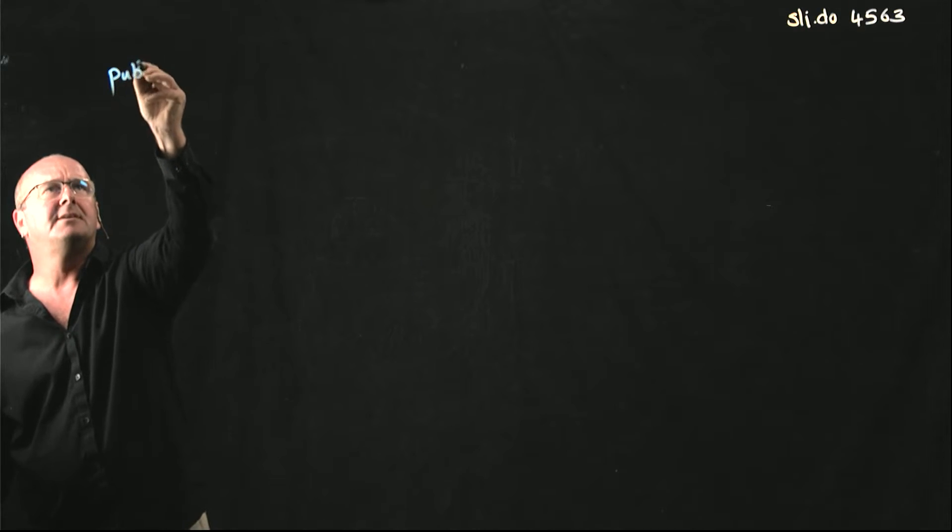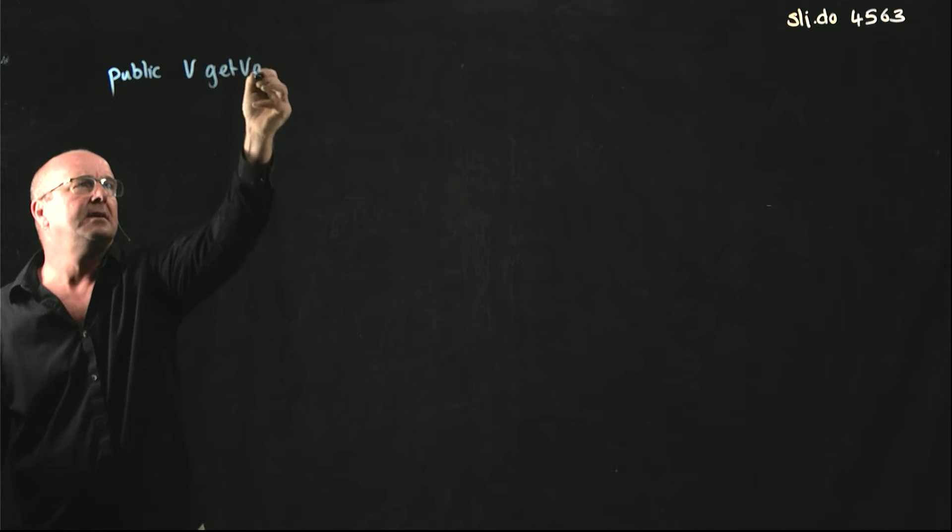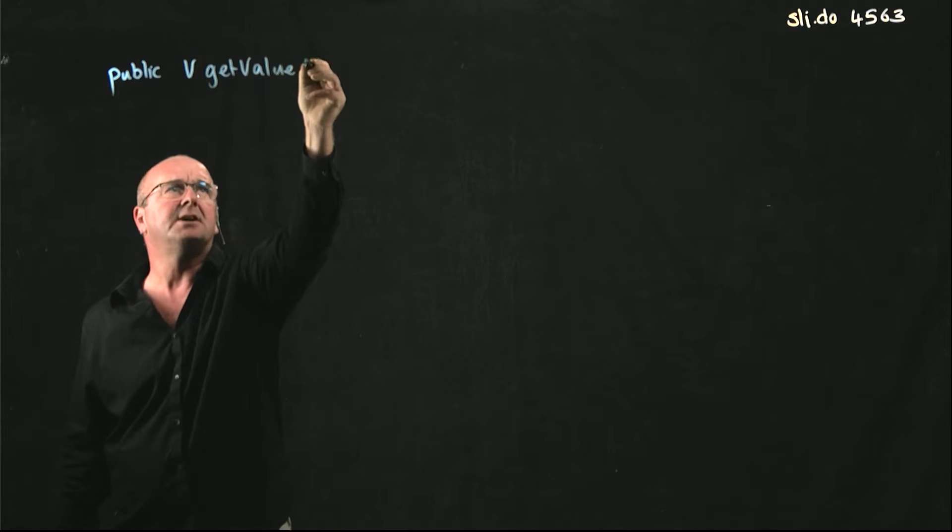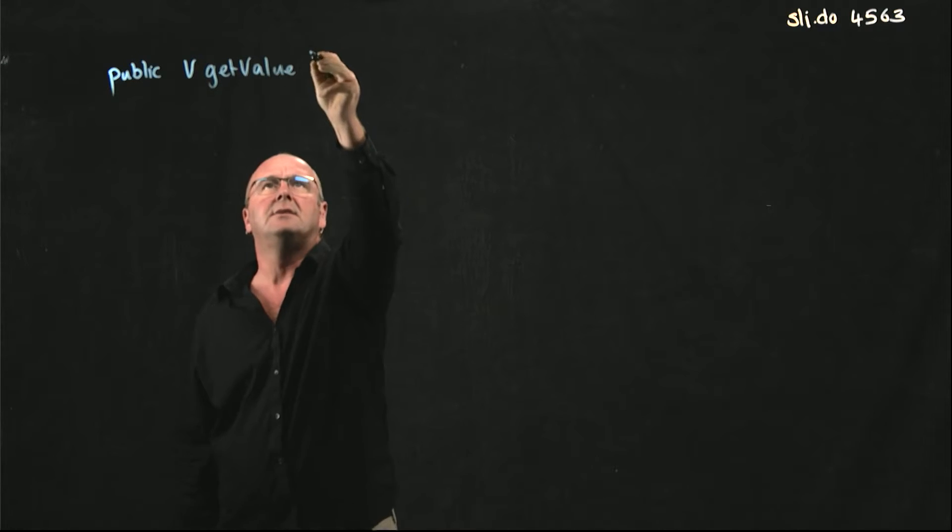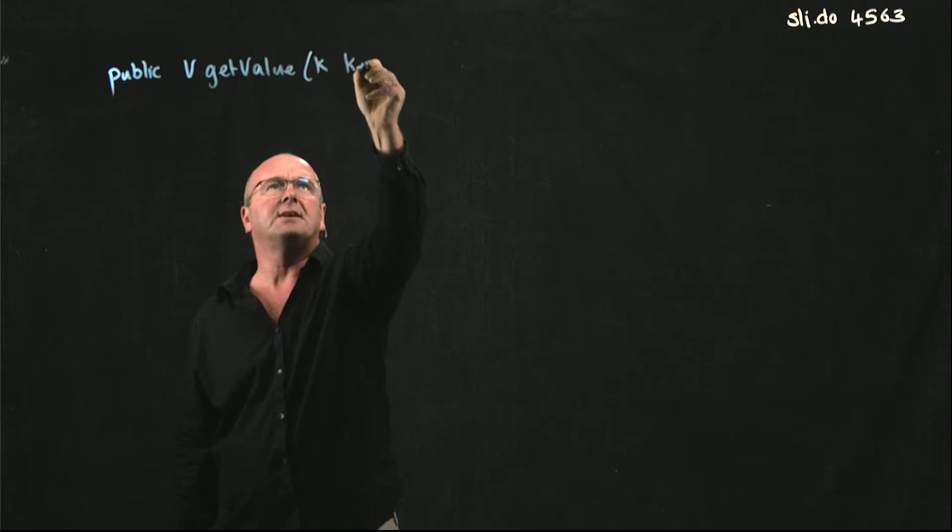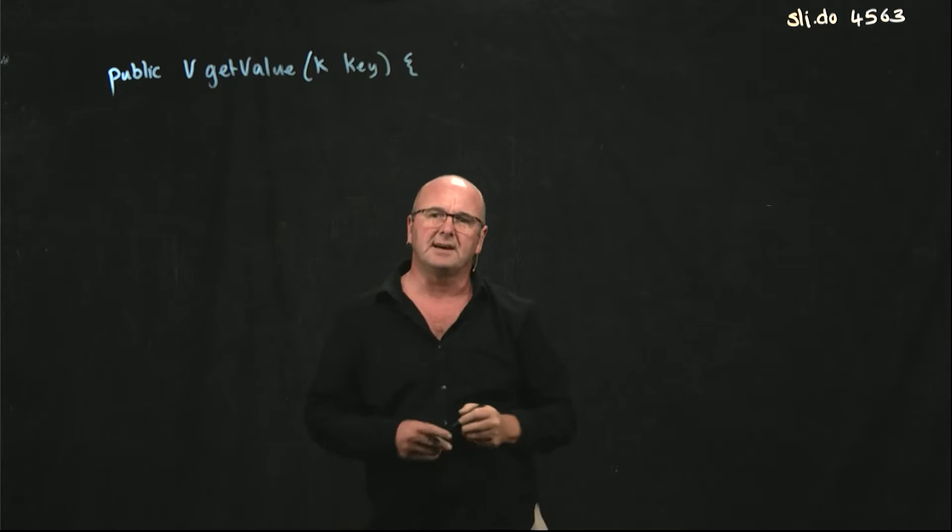So if we have a method it will return a V, our generic V, which is our value, and we're going to have to be given a key associated with that value.